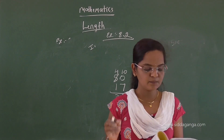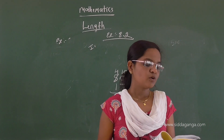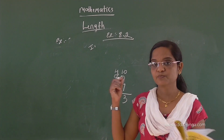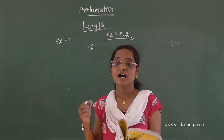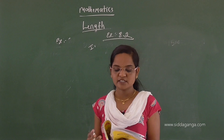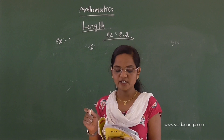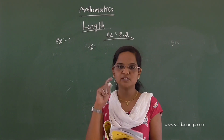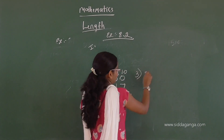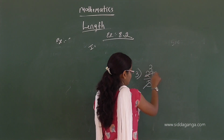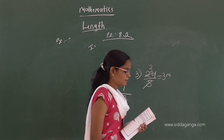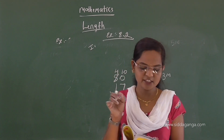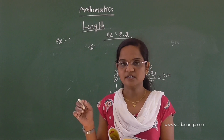Third question: 24 meters of colored ribbon is distributed among 8 students equally. What is the length of ribbon each one gets? The total ribbon is 24 meters. Distributed equally among 8 students, so we divide: 24 divided by 8. 8 threes are 24, so each student gets 3 meters of ribbon.